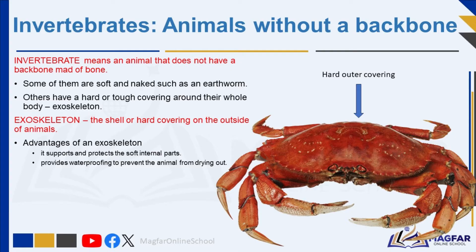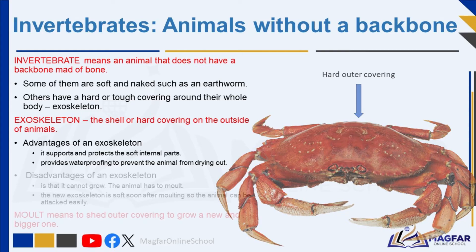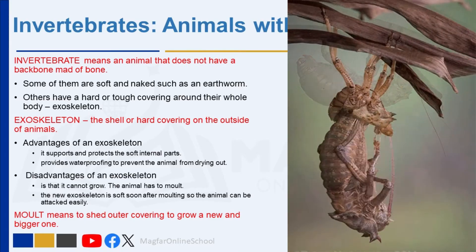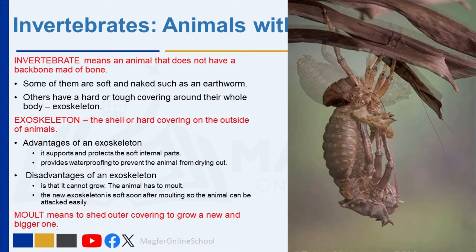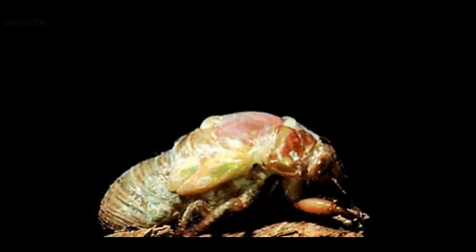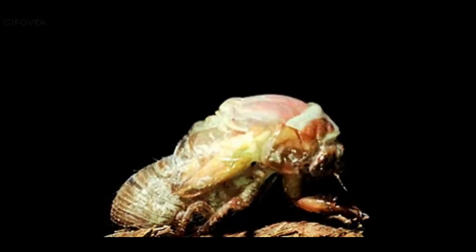An exoskeleton is made up of plates joined together to make a hard shell. The only place where an exoskeleton is thin and soft is where the body must bend, for example at the leg joints. The advantages of an exoskeleton are that it supports and protects the soft internal parts of the animal and provides waterproofing to prevent the animal from drying out. The disadvantage is that it cannot grow — the animal has to molt, meaning it sheds its covering to grow a new and bigger one. The new exoskeleton is soft soon after molting, so the animal can be attacked easily.